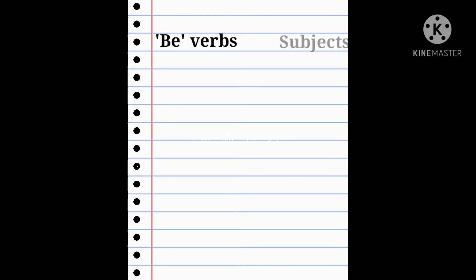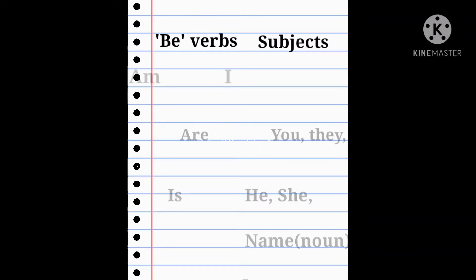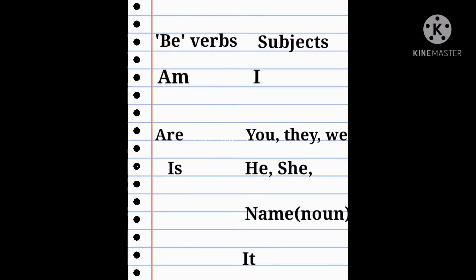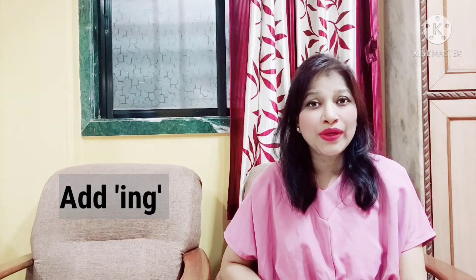Let us see the sentence formations. But before that, let us see the usage of be verbs in the sentences. Be verbs are used with their respective subjects: 'am' is used with 'I'; 'are' is used with 'you,' 'they,' and 'we'; 'is' is used with 'he,' 'she,' a name, and 'it.' Add '-ing' to the main verb to show that the action is continuing.